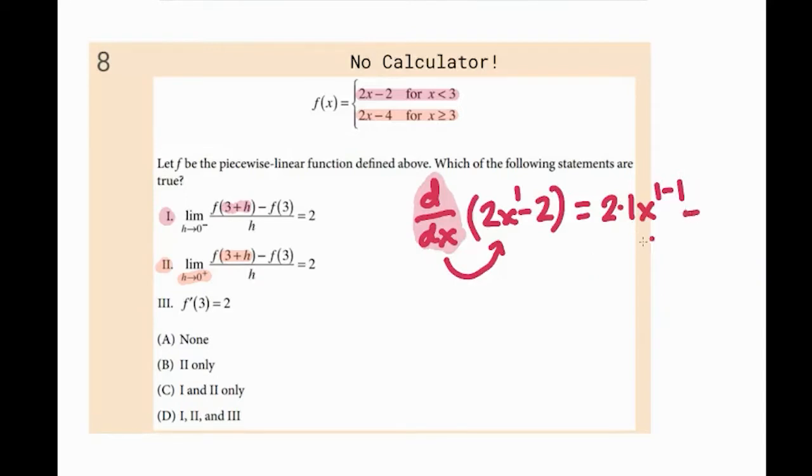You do the same thing here, but the two, it's just two by itself. But if you wrote it as a power, it'd be two x to the zero power. So you bring down the zero, well, it's just zero times a bunch of stuff. So I'm just going to write minus zero. The derivative of a constant is always zero.